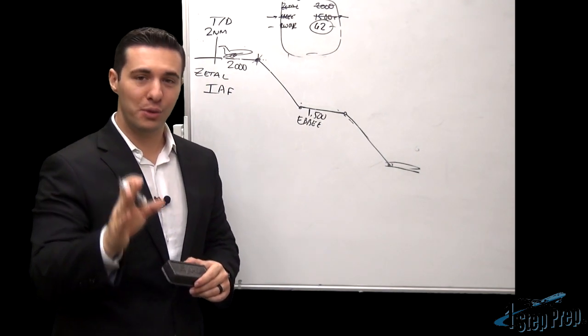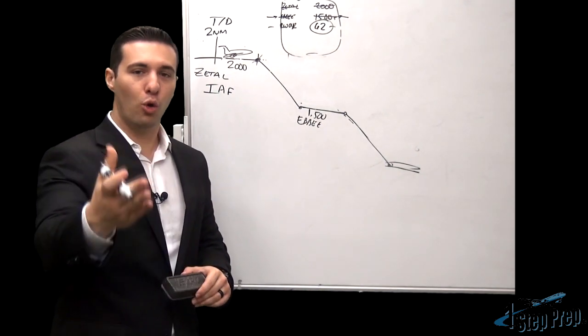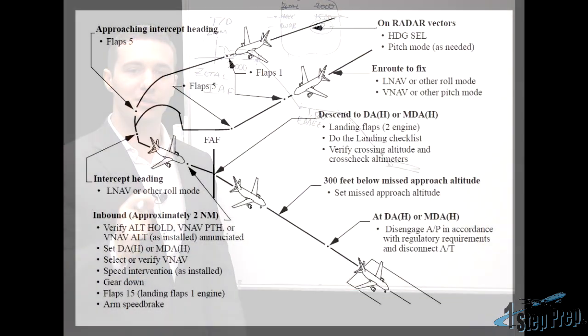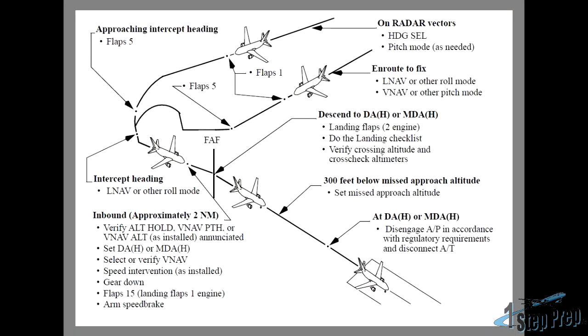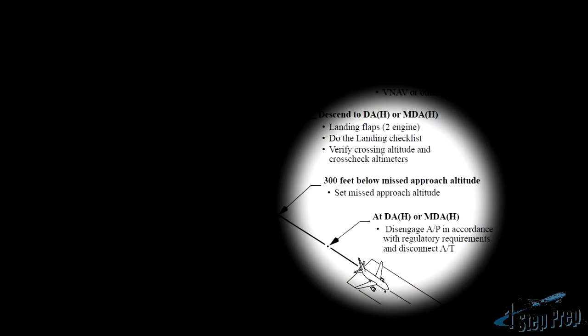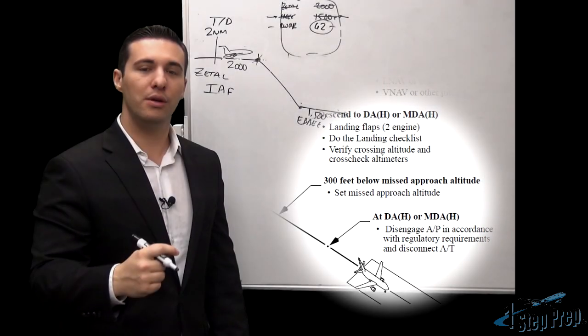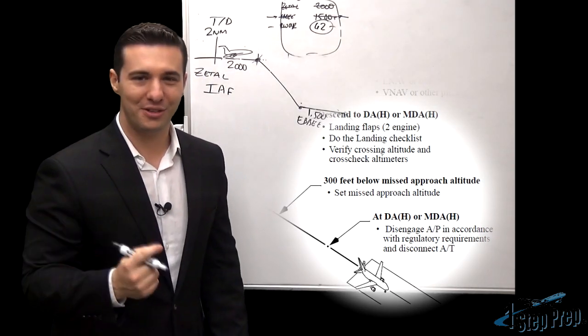Now, you heard that right, 300 feet below the missed approach altitude. We're going to overlay the maneuver section of the QRH right here on the screen so you can see where this is illustrated within the manual. And once more, let's make sense of the setting of the missed approach altitude 300 feet below the missed approach altitude.